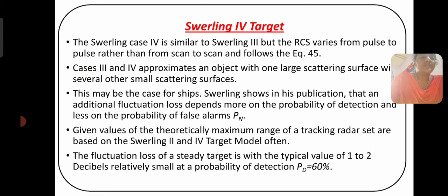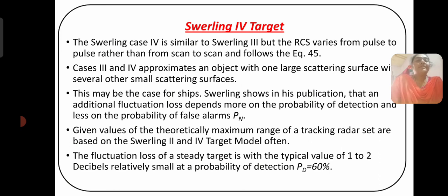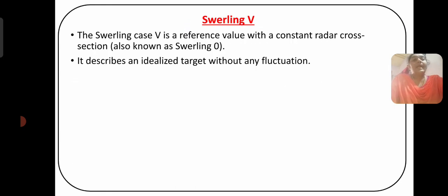The fluctuation loss of a steady target, in which the typical value is one to two decibels, is relatively small at a probability of detection PD of 60 percent. The last model is Swerling Case 5, which is a reference value with a constant radar cross-section, also known as Swerling Zero. It describes an idealized target without any fluctuation.